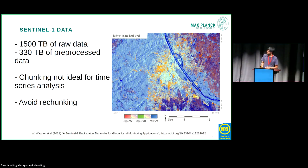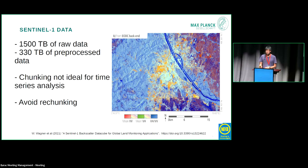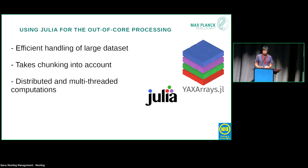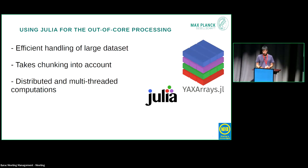For the scaling, we use the Sentinel-1 dataset, which is basically an Equi7 grid of preprocessed data globally — around 7 petabytes. You don't want to download all of this, so we use it as-is on the EODC cluster. The chunking is not ideal for time series analysis because it's basically one map per Sentinel-1 scene, but I wanted to avoid re-chunking the whole dataset. We're using Julia for the out-of-core processing with the YAXArrays package, which efficiently handles large datasets, takes the chunking into account, and makes it very easy to distribute and multi-thread the whole computation.